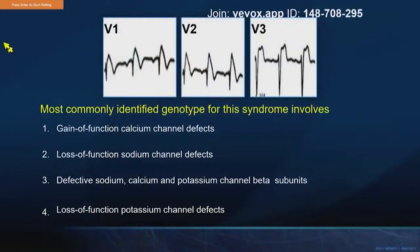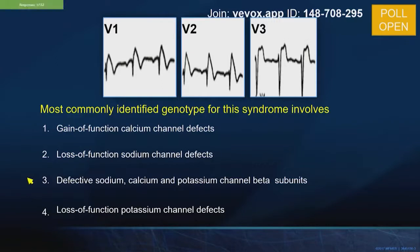Here we have leads V1, V2, V3. The question: what is the most commonly identified genotype for this syndrome? Options: A) gain of function calcium channel defect, B) loss of function sodium channel defects, C) defective sodium, calcium, and potassium channel beta subunits, or D) loss of function potassium channel defects.